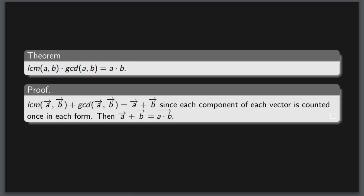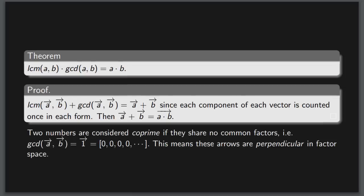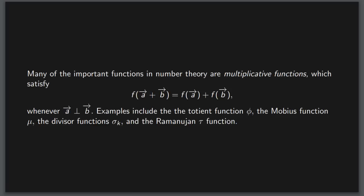Those familiar with linear algebra might see this as a change of basis. One reason I speak of these operations in particular is that the greatest common divisor can reveal if two numbers are coprime, which is the geometric meaning of perpendicular arrows in the factor space. And we care about perpendicular vectors because many of the important maps we care about in number theory are the multiplicative functions, which allow for the addition of perpendicular vectors to be preserved through its application.